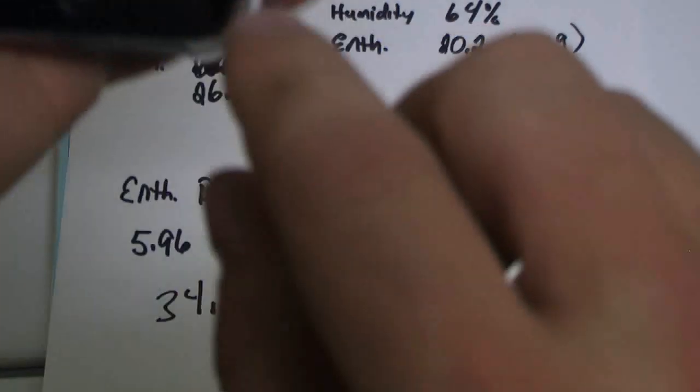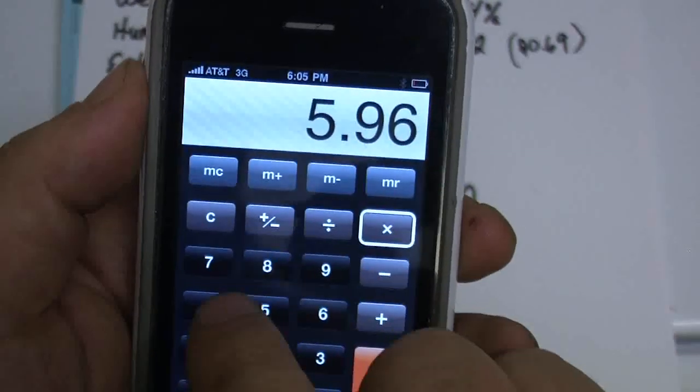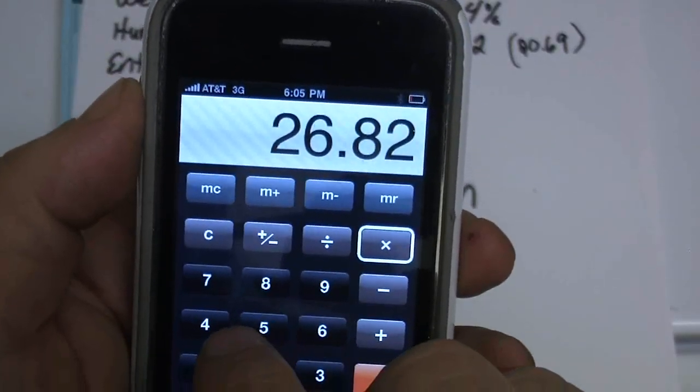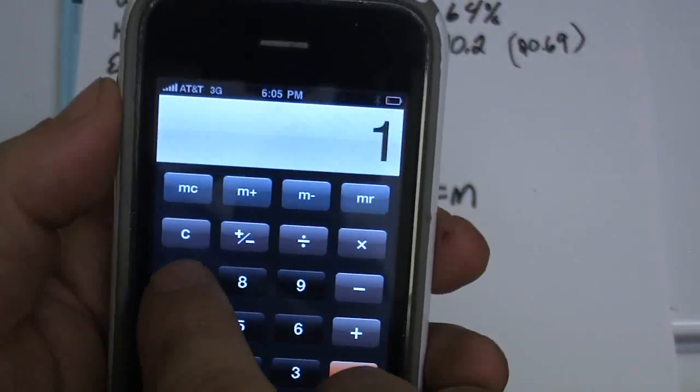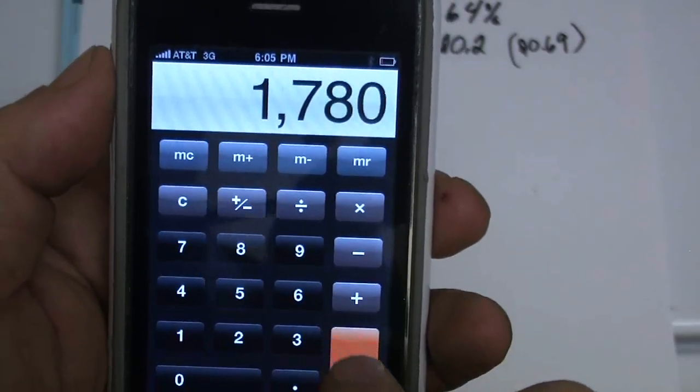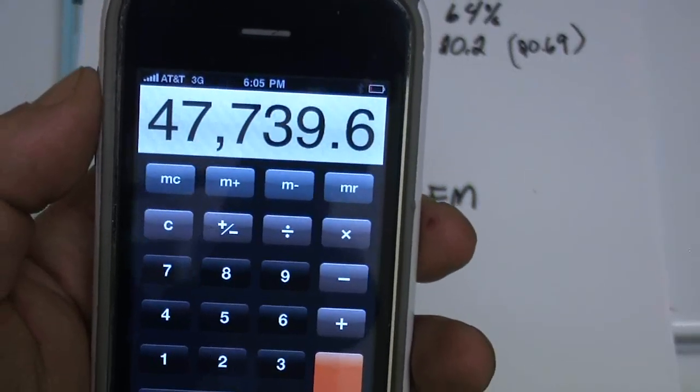We got 5.96 times 4.5 times, and we'll just say 1780. That's about where that CFM was today. Look at that. That's way too high.